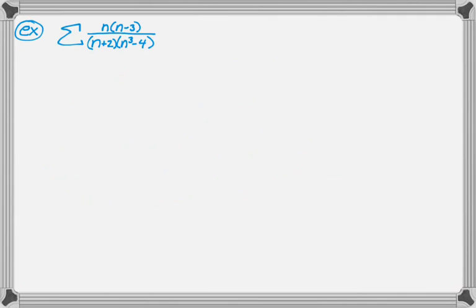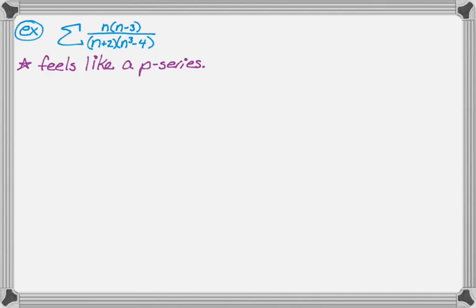Let's take a look at an example. We have the sum of n(n−3) all over (n+2)(n³−4). When I look at this, it feels like a p-series where a bunch of weird things have been done. For example, n minus 3 probably should have just been n, but somebody subtracted 3. And n cubed minus 4 should have really just been n cubed, but we subtracted 4.